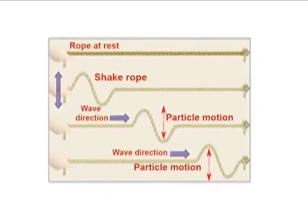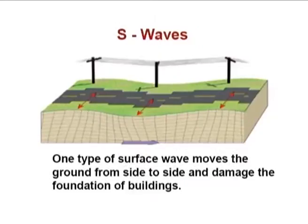For example, if you take a single rope and slightly shake it from one end, waves will be generated. You get a first wave, second wave, third wave — that is named particle motions. The waves come from one side and go down, and again touch the rope — that is called the wave direction. This is how S waves and transverse waves travel. Another motion is zigzag motions, where a type of surface wave moves the ground from side to side and can damage the foundation of buildings. That is how seismic waves act.